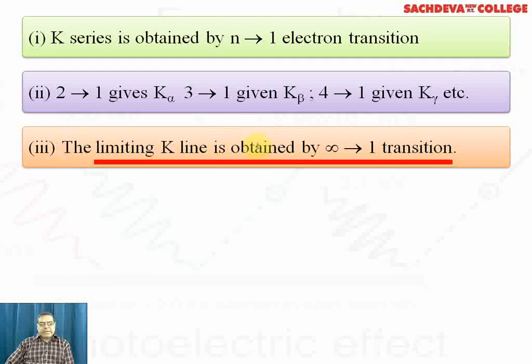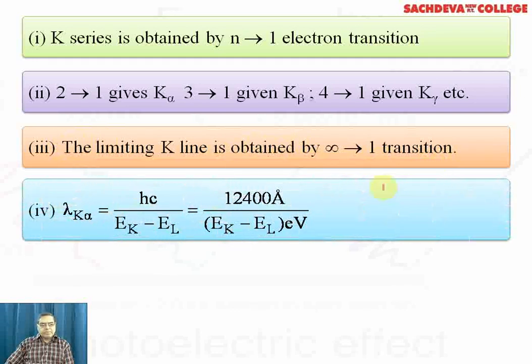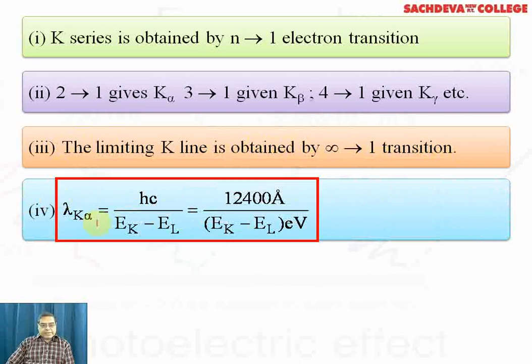The limiting K line is obtained by ∞→1 transition. Wavelength of K alpha line is λ = hc/(E_K - E_L), where E_K is the energy in K shell and E_L is the energy of electron in L shell. Using a shortcut formula: 12,400 angstrom divided by (E_K - E_L) in eV.